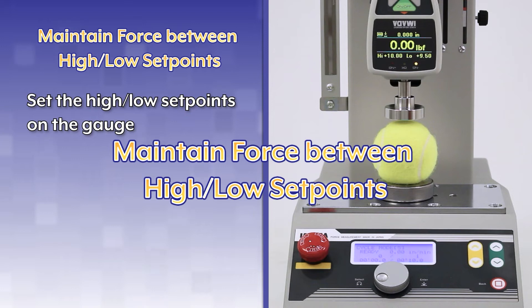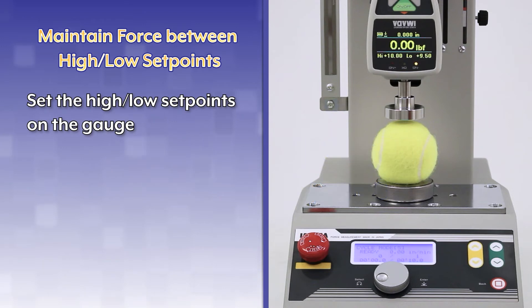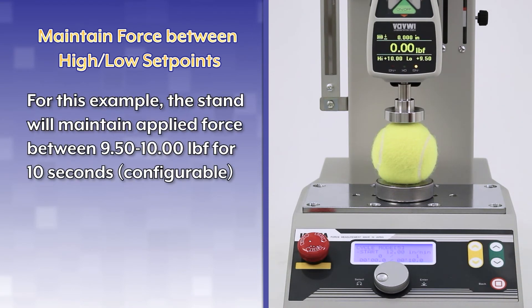Maintain force between high-low set points. Set the high-low set points on the force gauge. For this example, the stand will maintain applied force between nine and a half and ten pounds force for ten seconds, configurable.